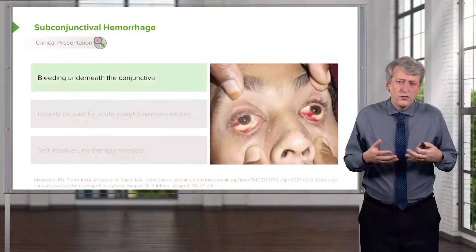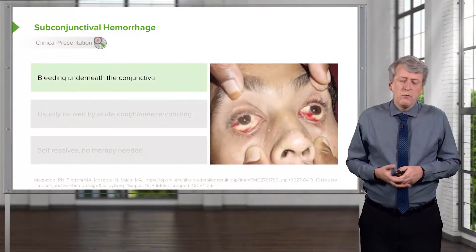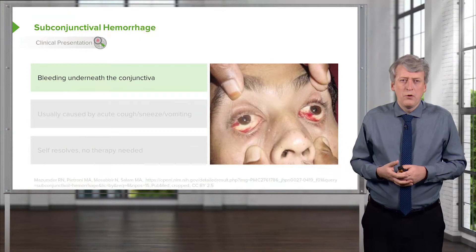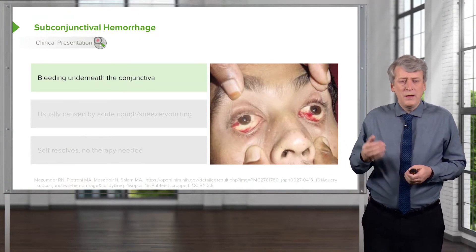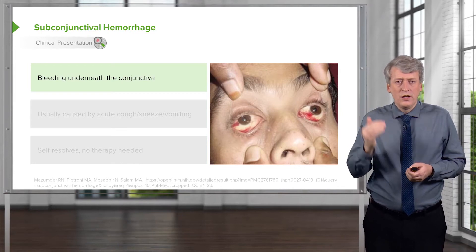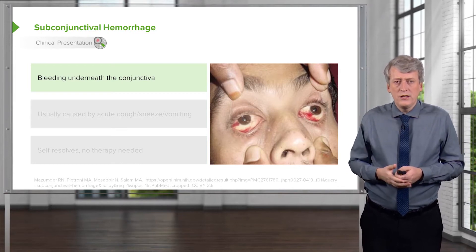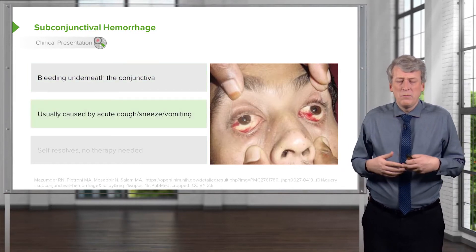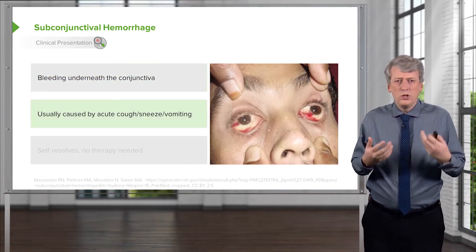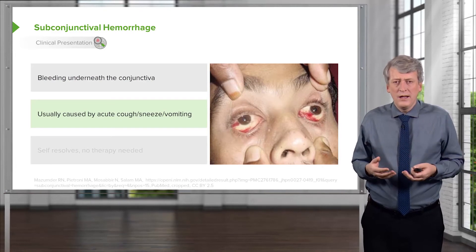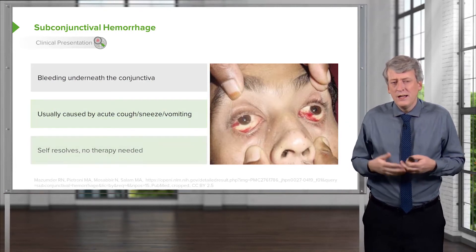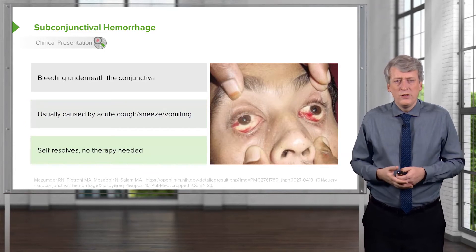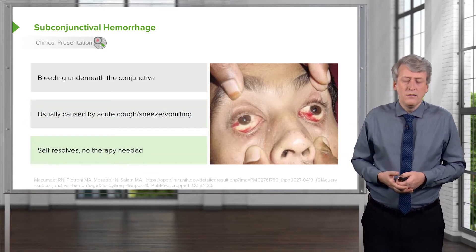Another thing you'll see frequently, which really isn't much of a problem, is subconjunctival hemorrhage. This is when patients have bleeding just under the conjunctiva. It's usually caused by an acute cough, sneeze, or vomiting. It's really just a small hemorrhage — it's self-resolving and there's really no therapy needed.